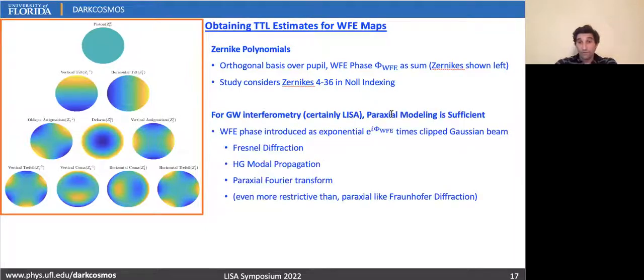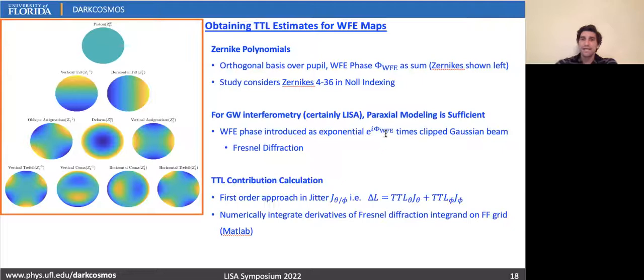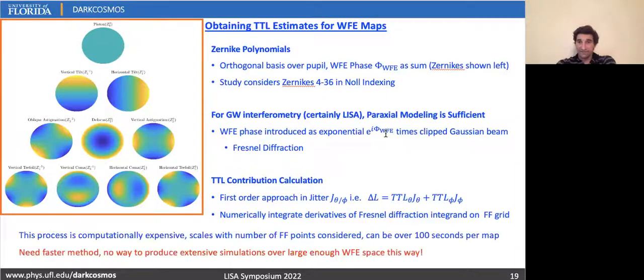We then go about calculating the far field phase, and that's done by introducing this e^(iφ) for the initial wavefront error dependence times a clipped Gaussian, and we propagate it with any one of these methods. You can choose what you like, but these all require some numerical integration. We've chosen Fresnel diffraction, and then we take the appropriate angular derivatives. And the problem here is those numerical integrations. Even if we analytically differentiate, these things can take hundreds of seconds, nowhere near fast enough for the extremely large simulations we have in mind.